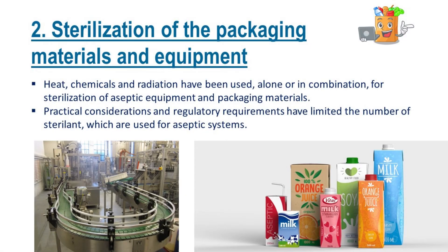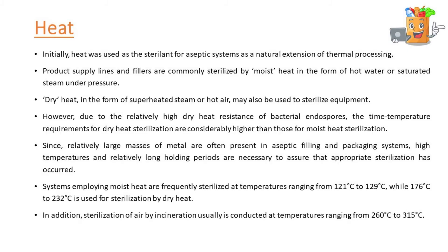Heat, chemicals and radiation have been used, alone or in combination, for sterilization of aseptic equipment and packaging materials. Practical considerations and regulatory requirements have limited the number of sterilants which are used for aseptic systems. Initially, heat was used as the sterilant for aseptic systems as a natural extension of thermal processing. Product supply lines and fillers are commonly sterilized by moist heat in the form of hot water or saturated steam under pressure. Dry heat, in the form of superheated steam or hot air, may also be used to sterilize equipment.